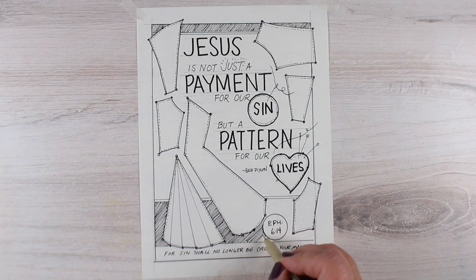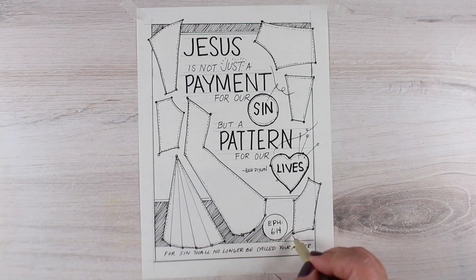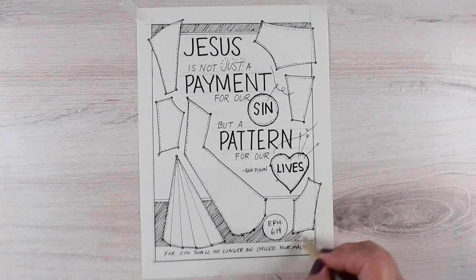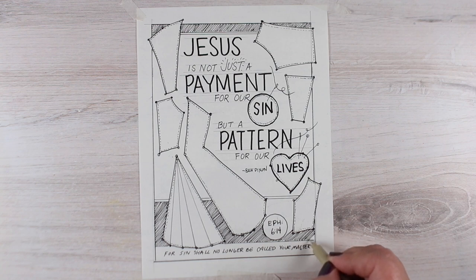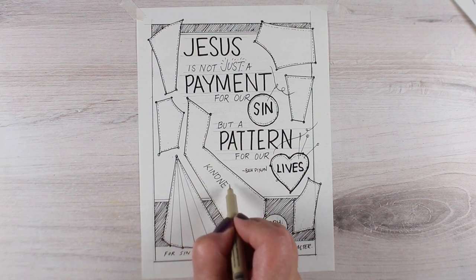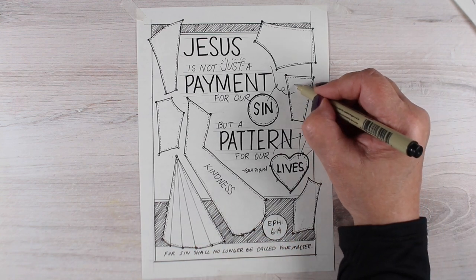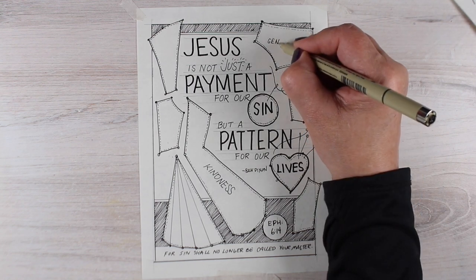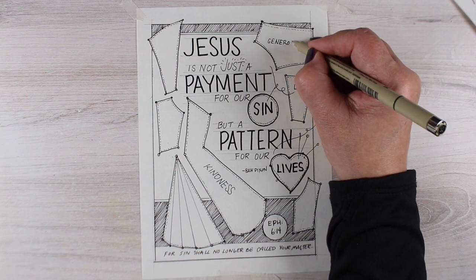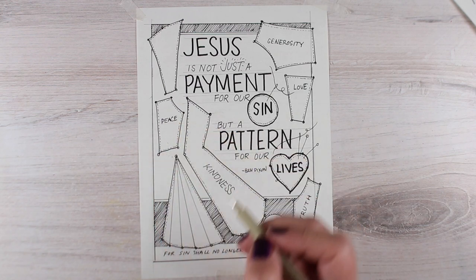But the phrase that my pastor has said a couple times now is that Jesus is not just a payment for our sin, but a pattern for our lives. And that really hit me. It's just one of those things where I think sometimes we can think so much about how he paid for our sins, that he almost becomes a transactional savior. That we go to him because he saved us. That was his job. He did that. And that was great, that was awesome. We're grateful for that. But the pattern for our lives part is the part that we sometimes skip. At least it's the part that I sometimes skip.